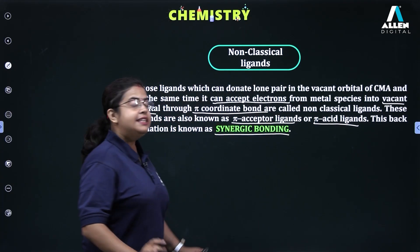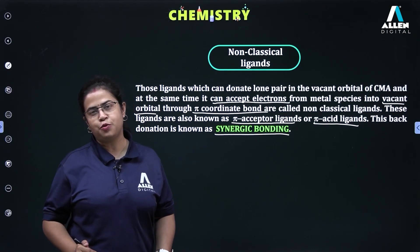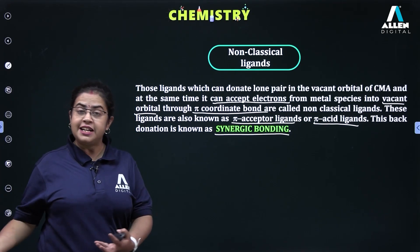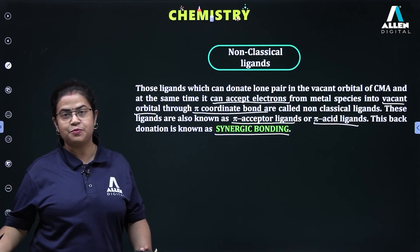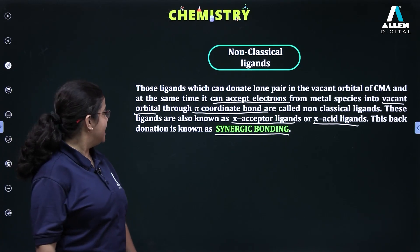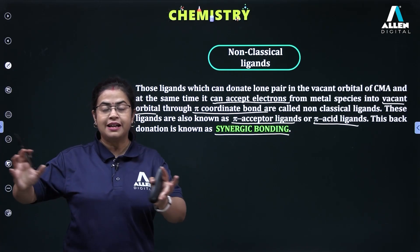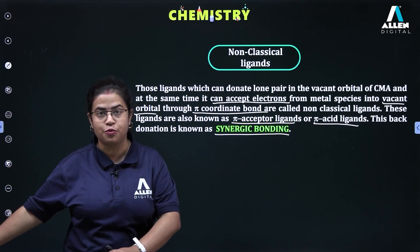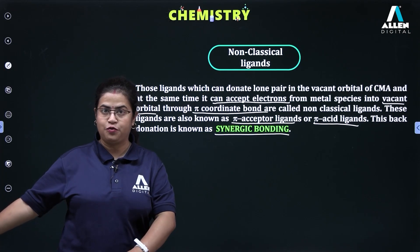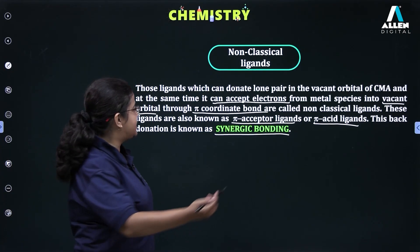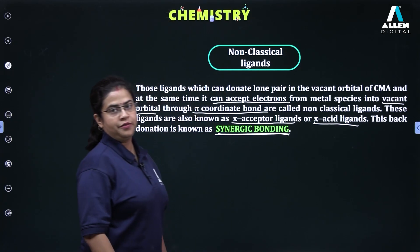This back-donation tendency means that the central metal atom or ion, once it accepts electrons from the ligands, gives back its electrons to the vacant orbitals of the ligands, forming an additional pi coordinate bond. This effect or bonding is known as synergic bonding.